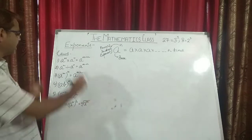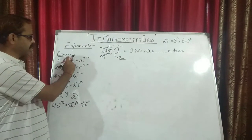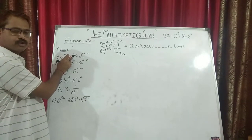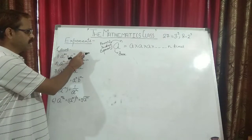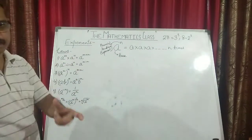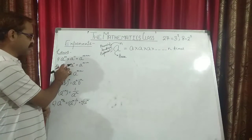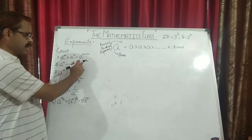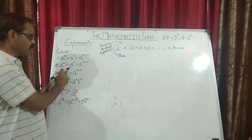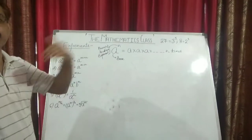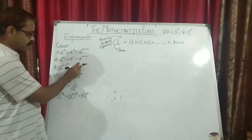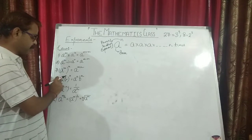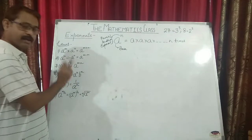Now there are a few laws you have already studied. First: a to the power m multiplied by a to the power n — when the bases are the same and the powers are different — gives a to the power m plus n. In the second case there is a division sign, so the power gets subtracted: m upon n means m minus n. Then a to the power m, whole to the power n — when the exponential form has one more power — these two powers get multiplied, giving a to the power m times n. Similarly, ab to the power n means a to the power n multiplied by b to the power n — you can break it.